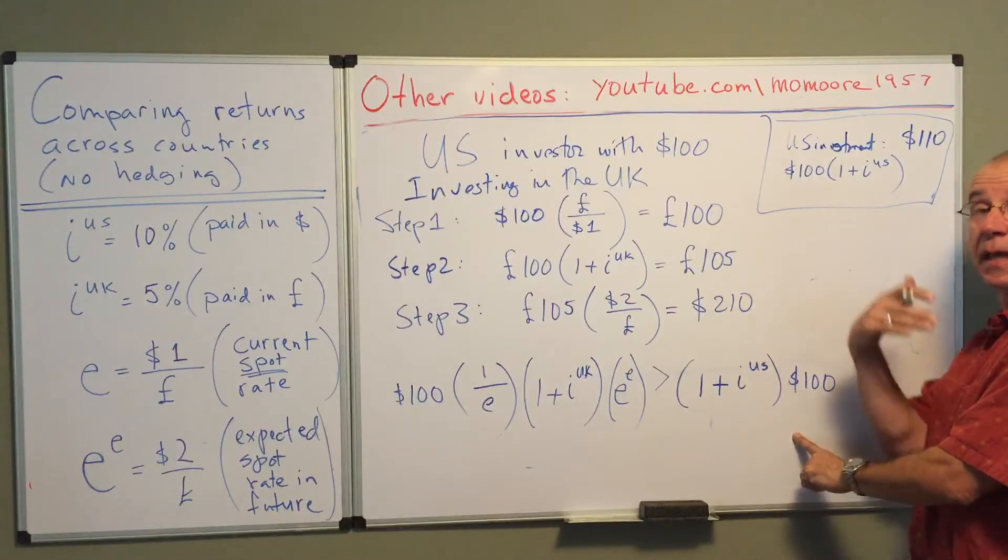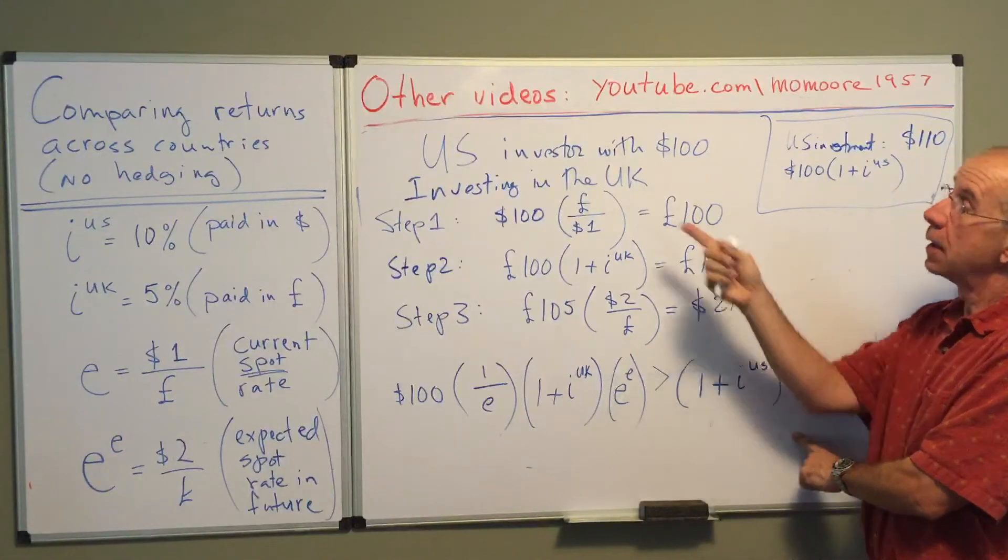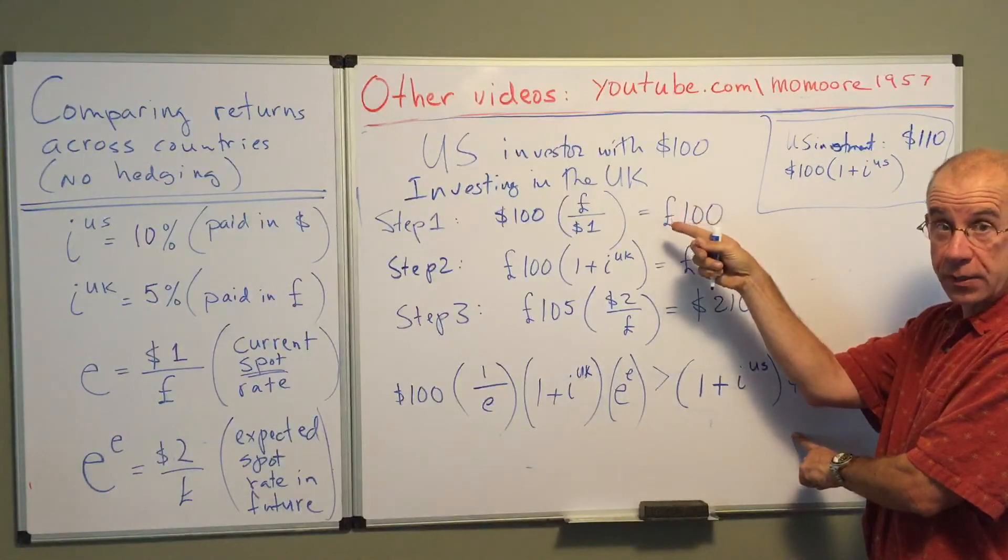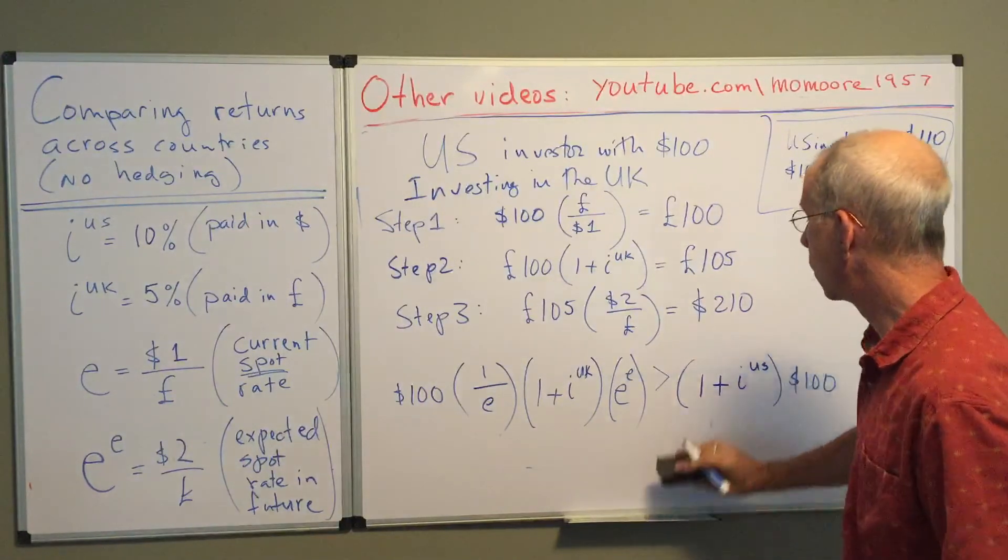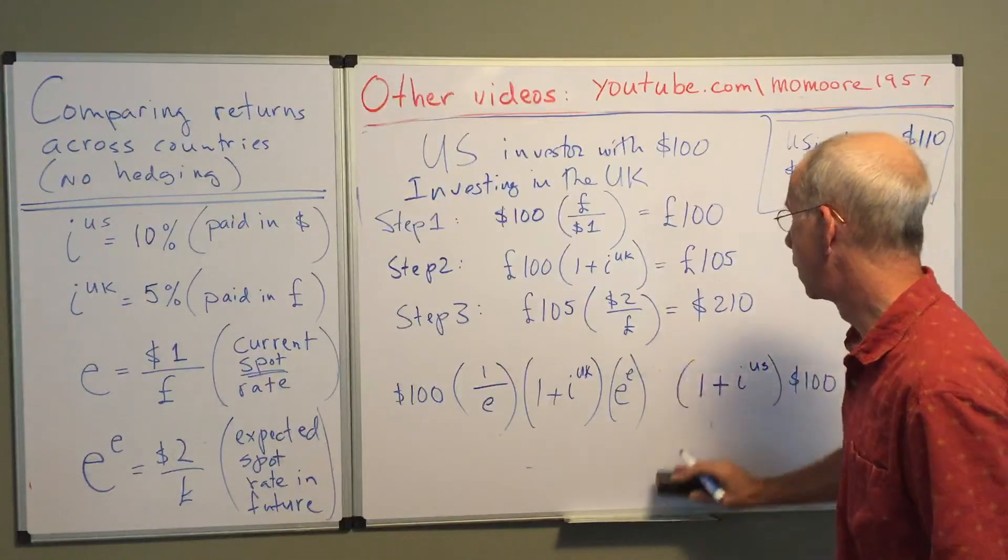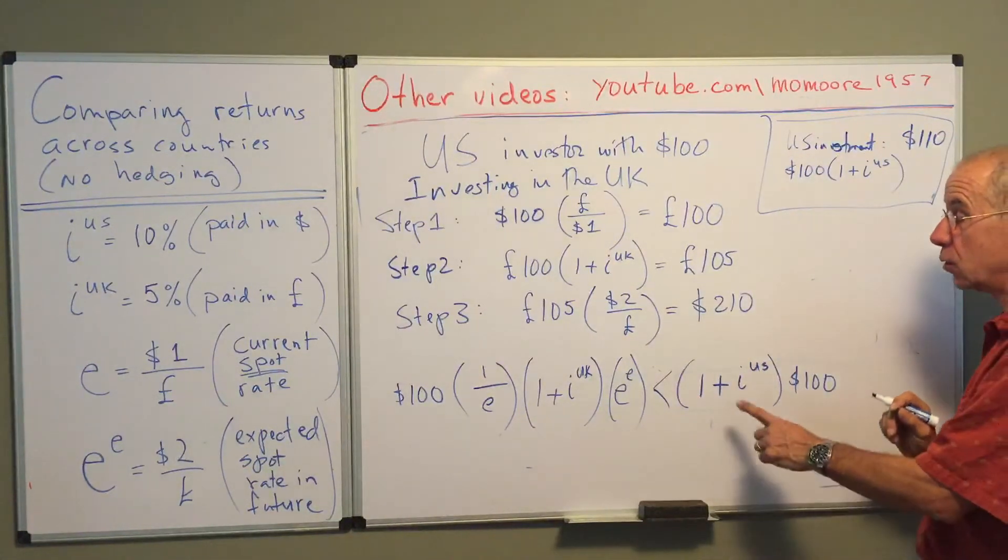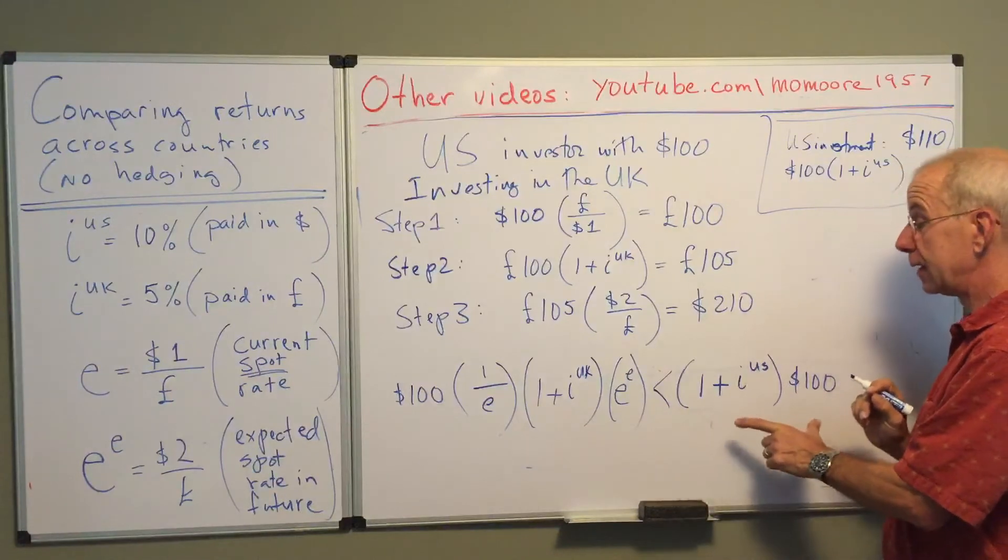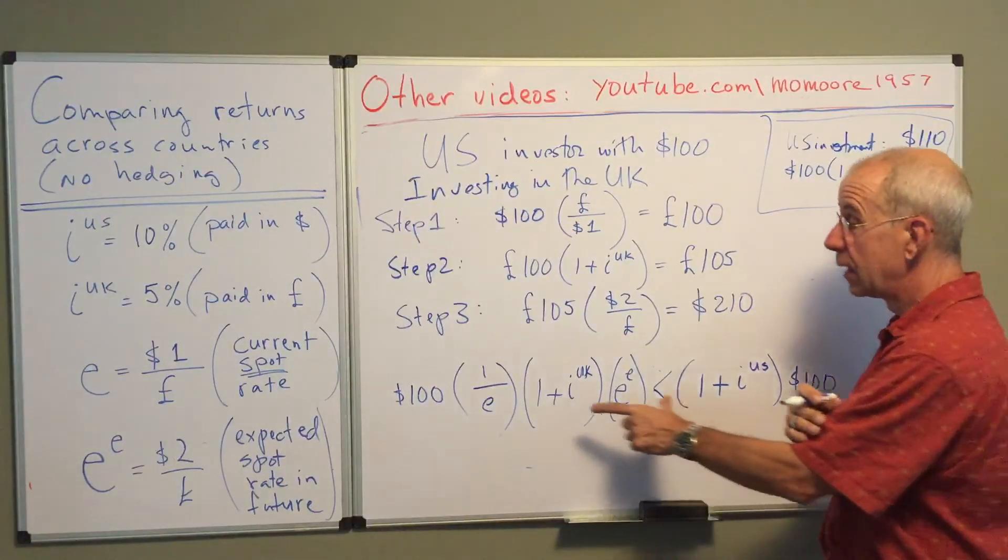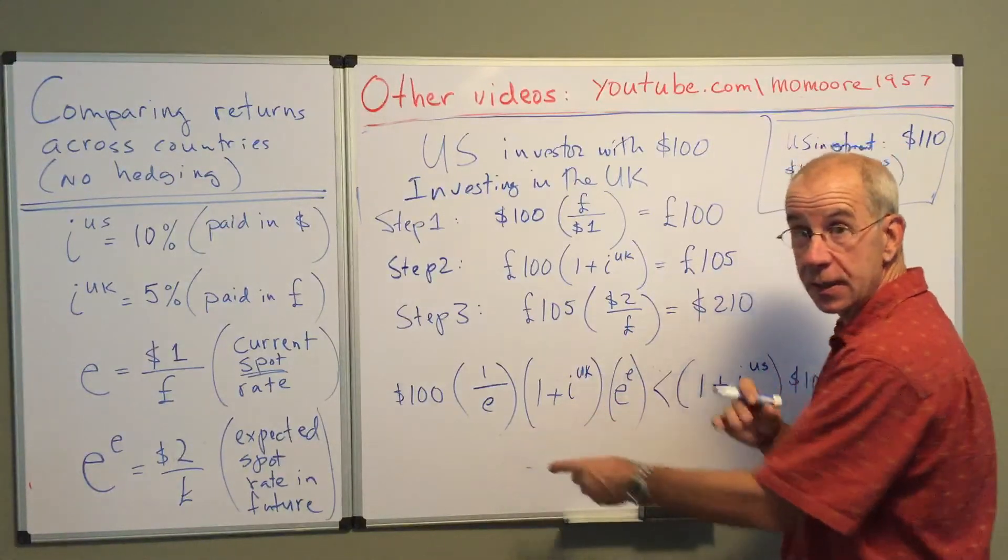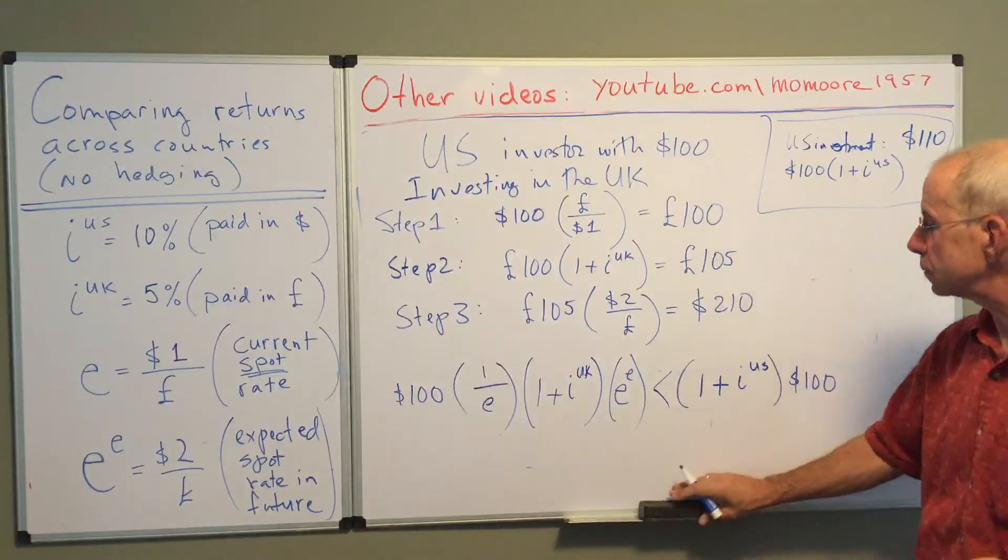If that's the case, then invest in Britain. The Americans should invest in Britain. Now, if you take this from the standpoint of the British, they'll also want to invest in the UK. If it were the opposite, then you would have the American asset as being more attractive than the British asset.